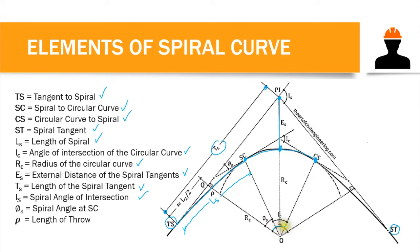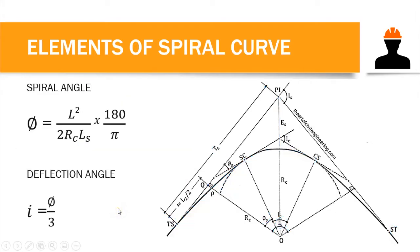We also have the spiral angle of intersection, I sub S, which is the total angle of the entire curve — adding the spiral angle at SC and the angle of intersection of the simple curve. We have phi sub S, the spiral angle at SC. These are the elements of a spiral curve, each with its own formula. The first formula is the spiral angle: phi equals L squared over 2·Rc·Ls, multiplied by 180 over pi to convert to degrees, where L is the distance from TS to any point on the spiral.